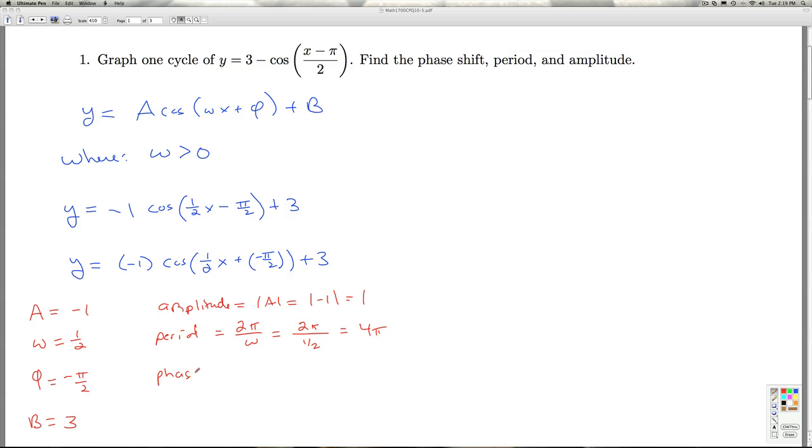And the phase shift is minus phi over omega, so it's minus negative pi over 2 divided by 1 half, and that's going to give me a positive pi.